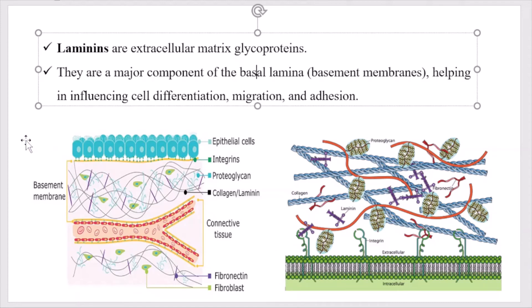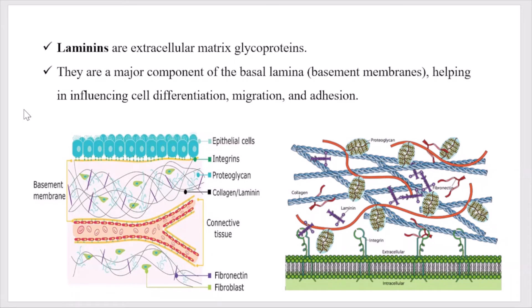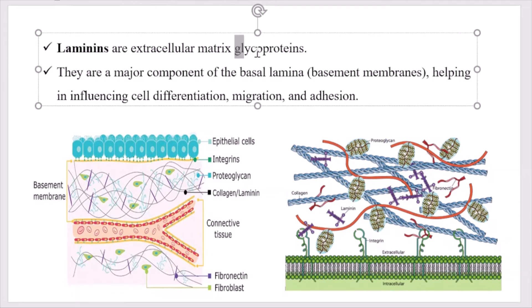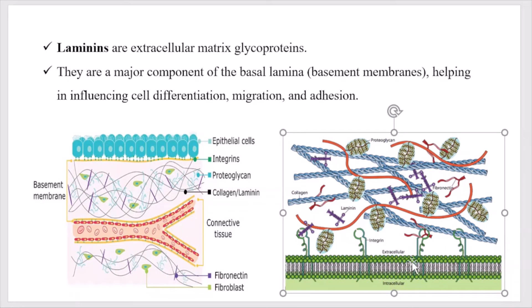Next is laminin. Laminins are extracellular matrix glycoproteins — they are glycoproteins present in the extracellular matrix. Here you can see many extracellular proteins present, and this cross-like structure is laminin. So laminin is an extracellular matrix protein. Other proteins like collagen, proteoglycan, and fibronectin are also present in this region.